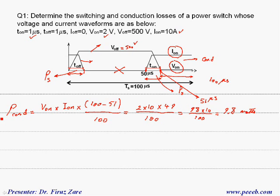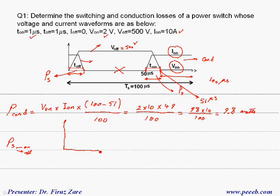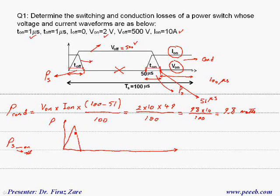Now we can look at the switching loss. To find the switching loss for either the turn-on or turn-off switching states, we need to calculate the area associated with the switching loss. The best approach is to draw the power waveform. If we multiply current and voltage, we get this power waveform.